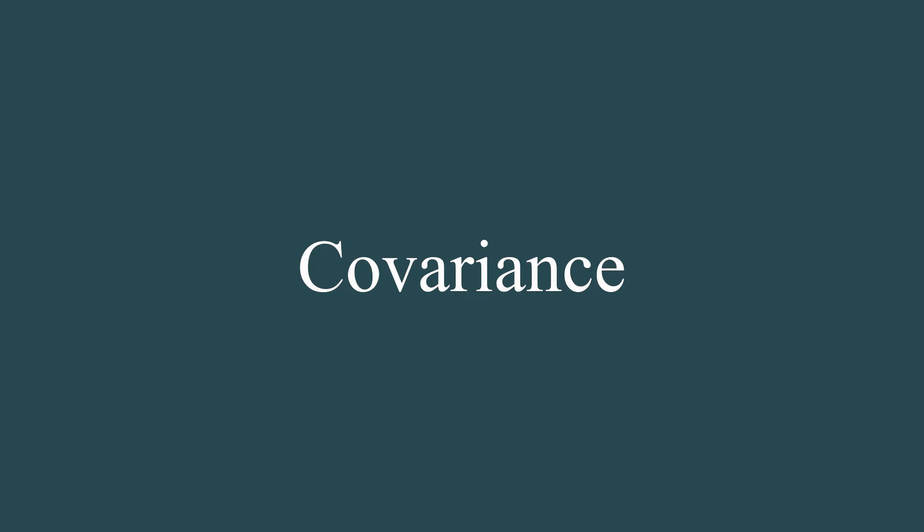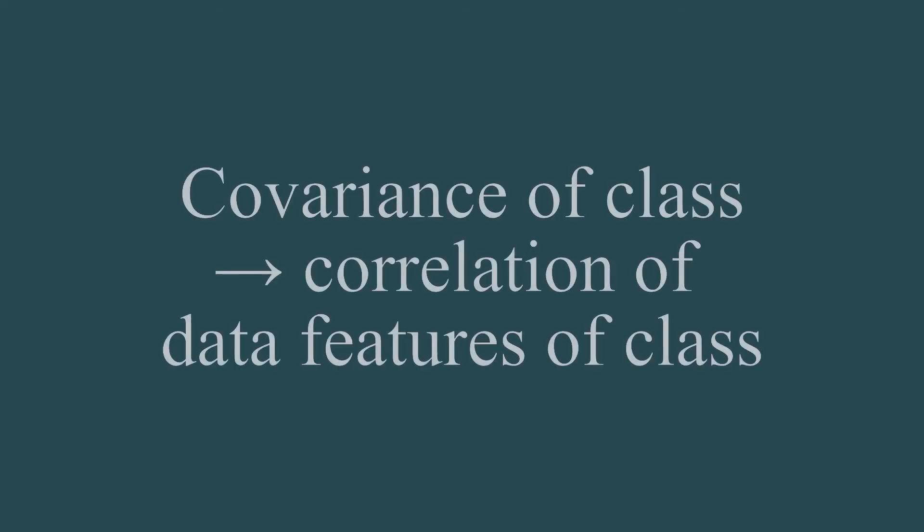Since covariance is a little bit tricky to explain, I'm just going to link the video about covariance in the description. On a short note, the covariance matrix of a class tells us how correlated, on average, the features of an individual data point from that class are.